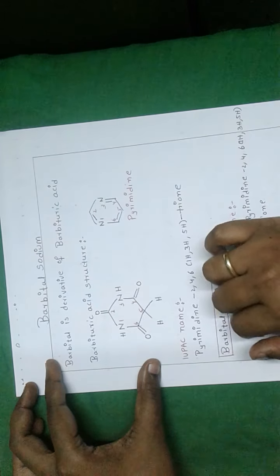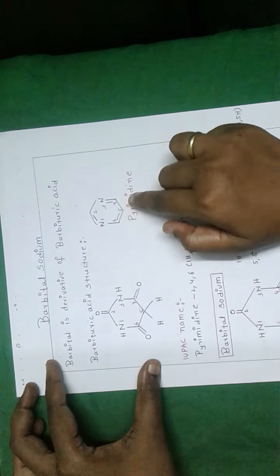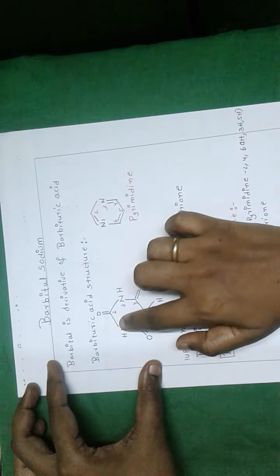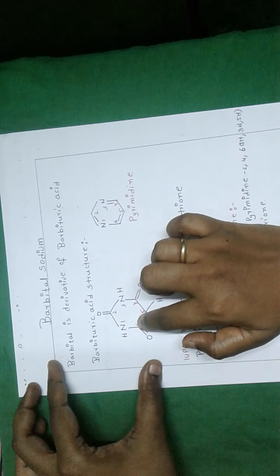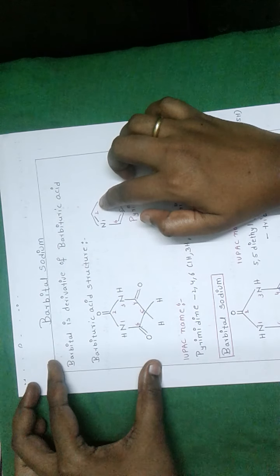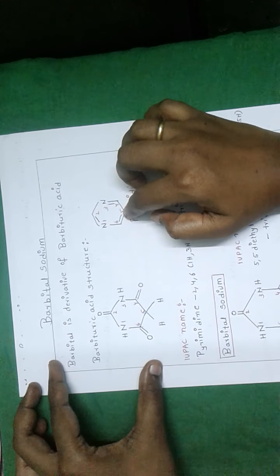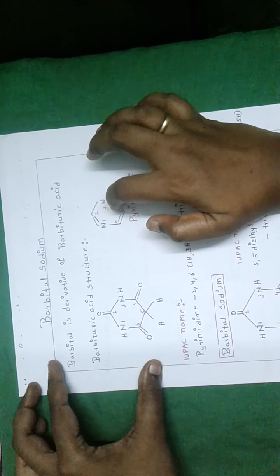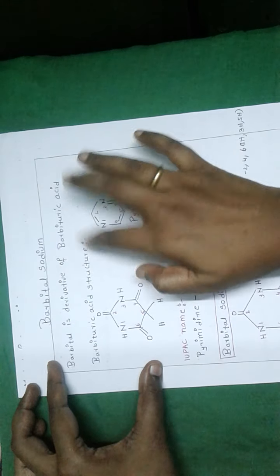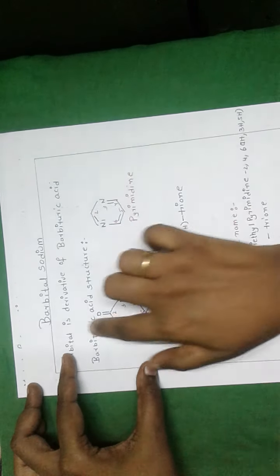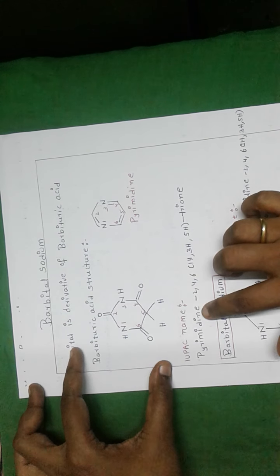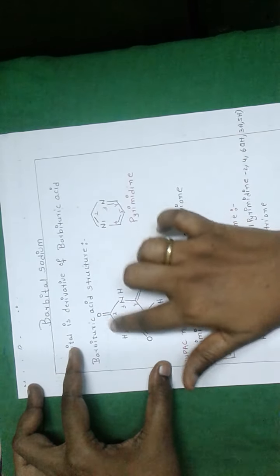This is the structure of barbituric acid, containing a saturated pyrimidine ring. We are calling it saturated because it does not contain any double bonds. In pyrimidine, at the first, third, and fifth positions, it contains three double bonds, but these three double bonds are reduced in the form of three ketone groups in barbituric acid.